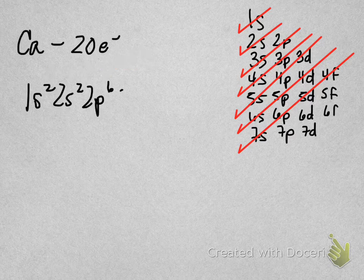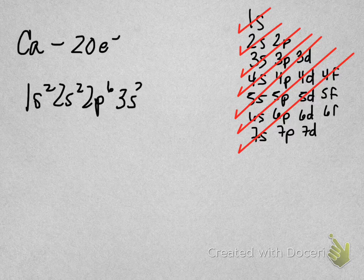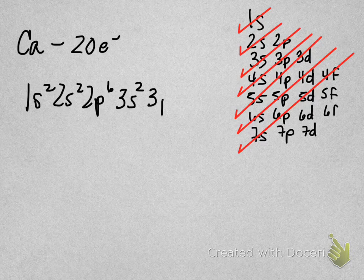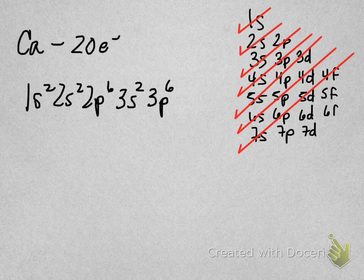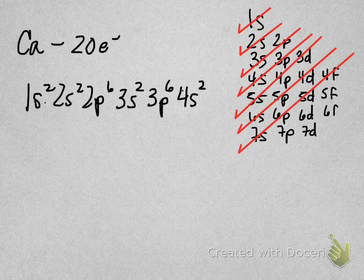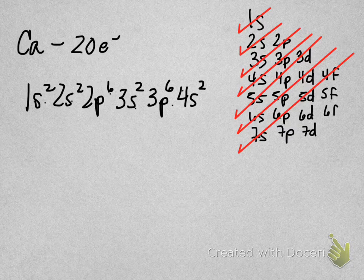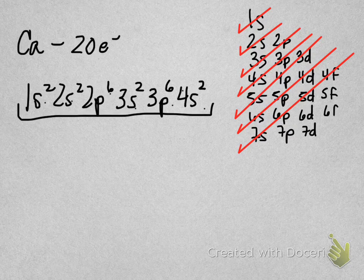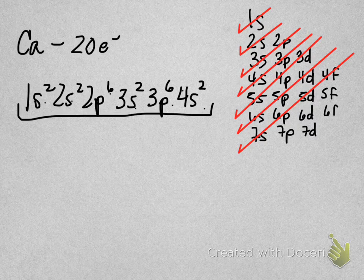Well, I know that after 2p I'm going to fill the 3s orbital. That gives me 2 more, I'm up to 12. Then I'm going to fill the 3p orbital. That can hold 6, that would get me to 18. And then I'm heading for the 4s orbital. Well, that gets me 2. Okay, so 2, 4, 10, 12, 18, 20, hey, that's it. That's my electron configuration notation showing the electron arrangement of a calcium atom.